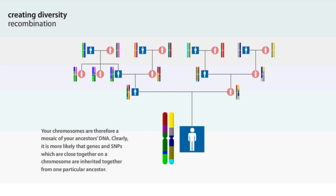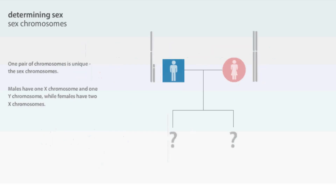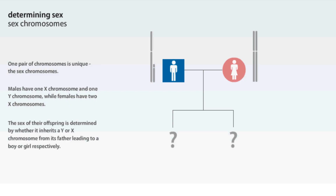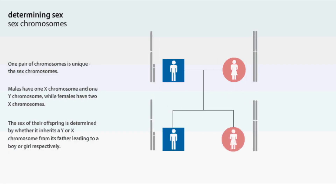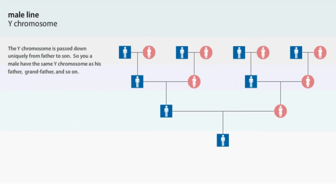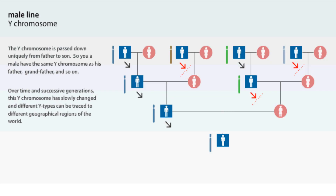Clearly, it's more likely that genes and SNPs which are close together on the chromosomes are inherited together from one particular ancestor. One pair of chromosomes is unique: the sex chromosomes. Males have one X chromosome and one Y chromosome, while females have two X chromosomes. The sex of their offspring is determined by whether it inherits a Y or X chromosome from its father, leading to a boy or girl respectively. The Y chromosome is passed down uniquely from father to son. So a male will have the same Y chromosome as his father, grandfather and so on. Over time and successive generations, this Y chromosome has slowly changed and different Y types can be traced to different geographical regions of the world.